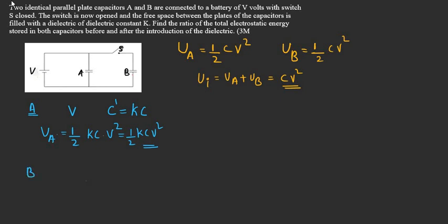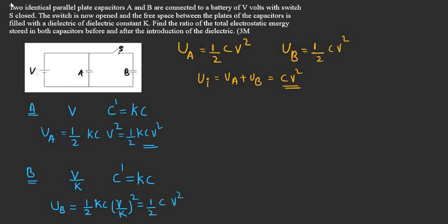Now for the second capacitor B, the switch S is opened, and after that we are introducing a dielectric of constant K. Since the switch is open, charge is conserved, so the potential across capacitor B becomes V/K, where K is the dielectric constant. The capacitance of B becomes K times its initial value KC. So the electrostatic energy stored in B is: U_B_new = ½ × KC × (V/K)² = ½C V²/K.